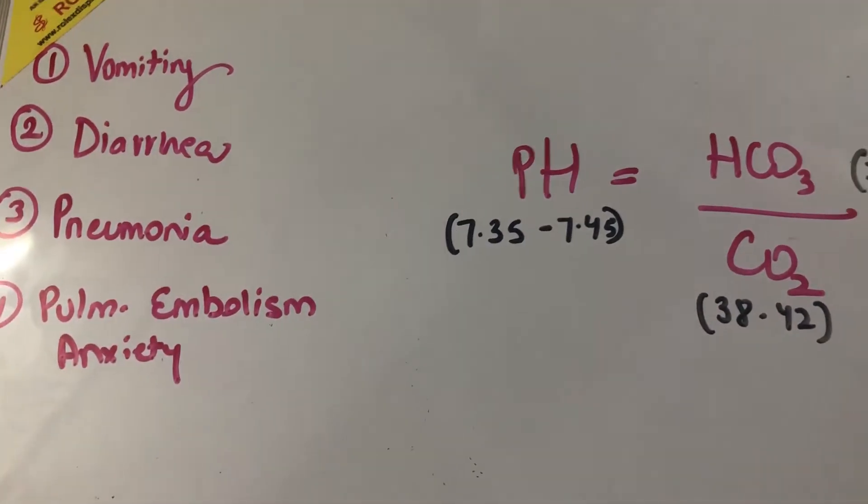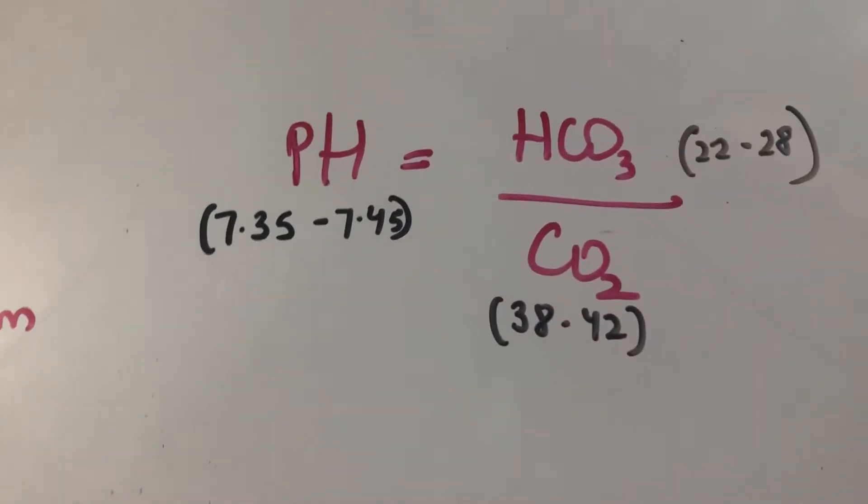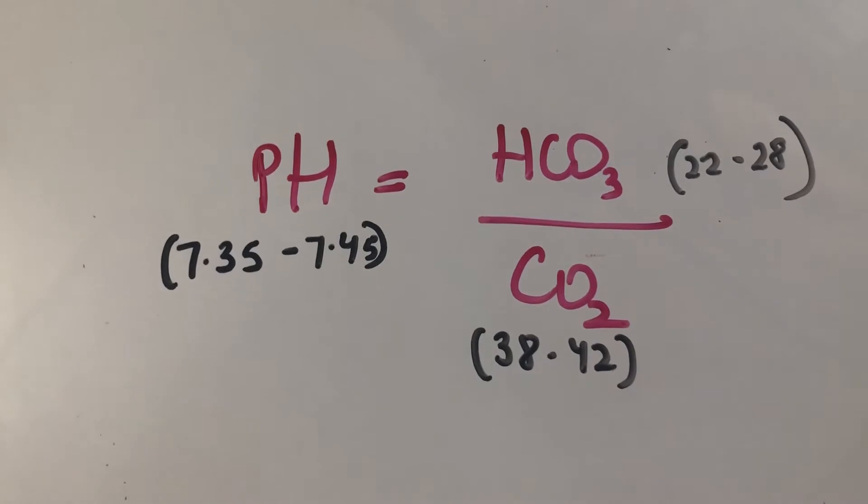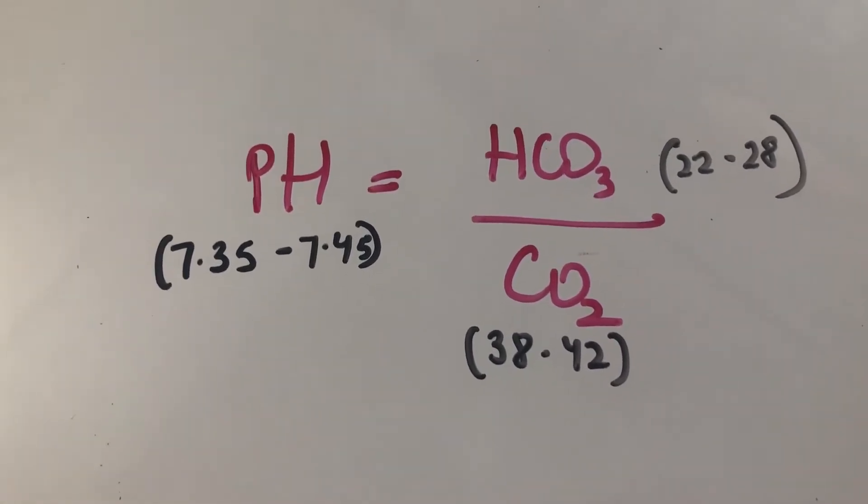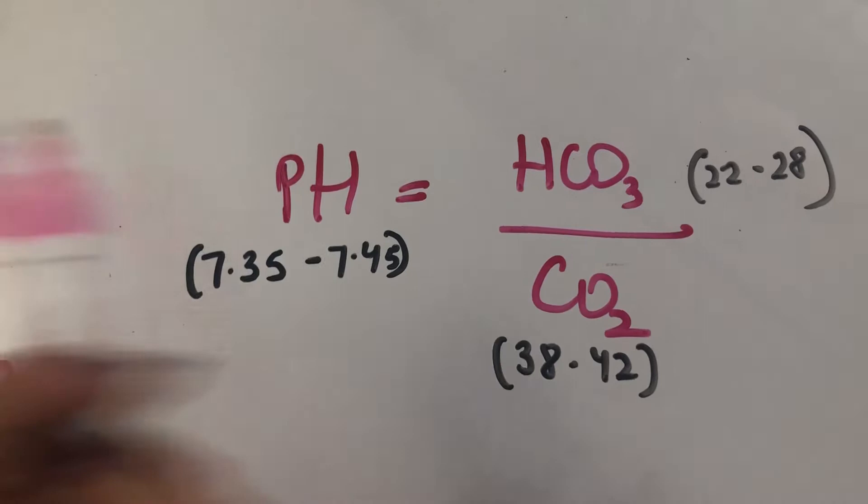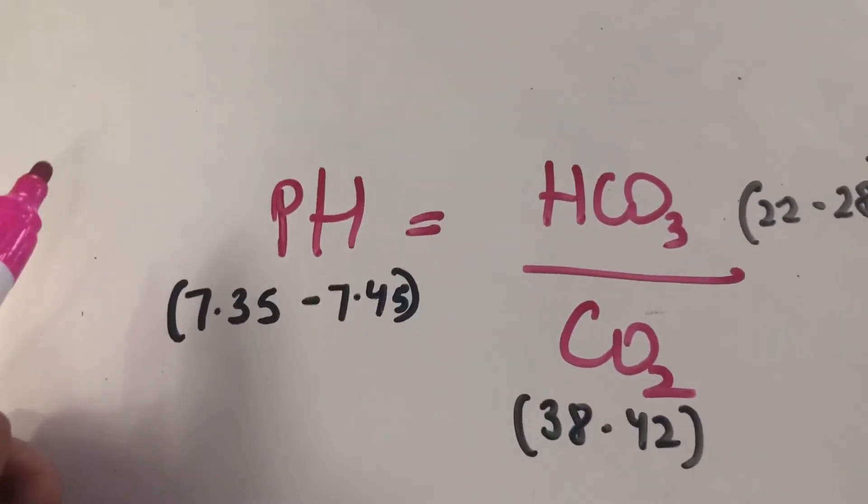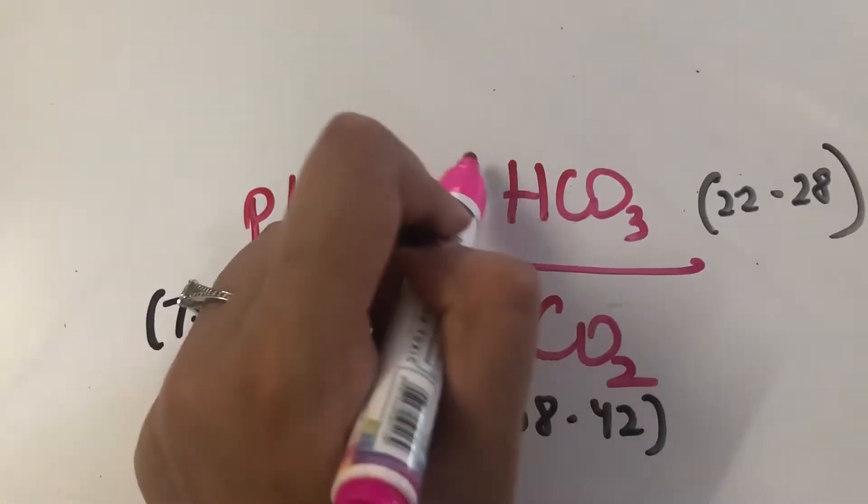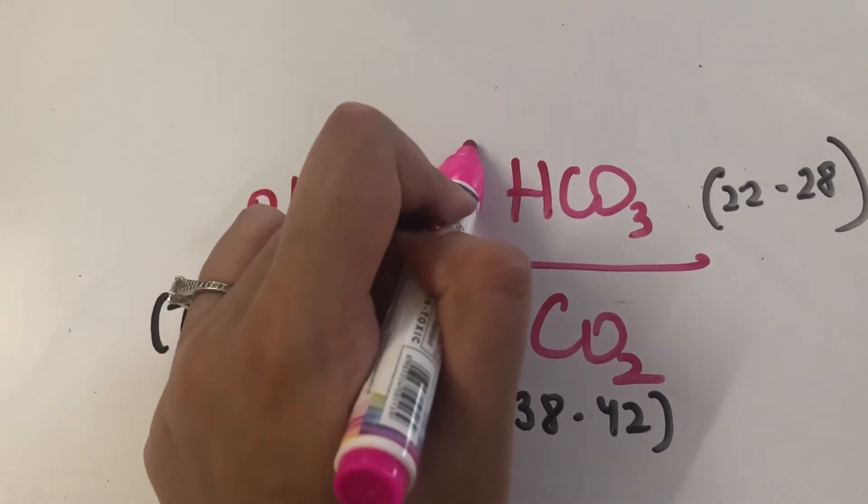So the first one is vomiting. What happens when a person vomits? So when you vomit a lot, you lose a lot of stomach acid, right, like HCl. So when you lose an acid, you gain a bicarbonate. So over time, with too much vomiting and too much loss of acid, you will gain a lot of bicarbonate.